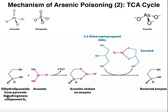Here we have the enzyme pyruvate dehydrogenase — specifically the E3 component of it. The same thing can also happen to the alpha-ketoglutarate dehydrogenase enzyme in the TCA cycle. The cofactor dihydrolipoamide is normally going to be involved in binding the acetyl group and then transferring it to coenzyme A. But what can happen is these two thiol groups can actually attack the arsenic atom. When they attack this atom, the two OHs are lost as two waters, and what you have now is the dihydrolipoamide with the sulfur here and the sulfur here both bound to the same arsenic.